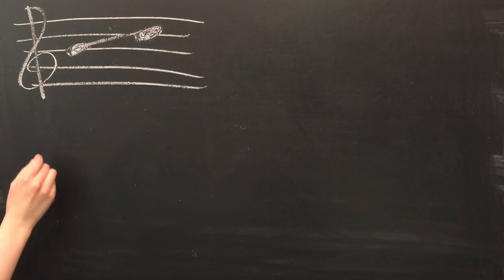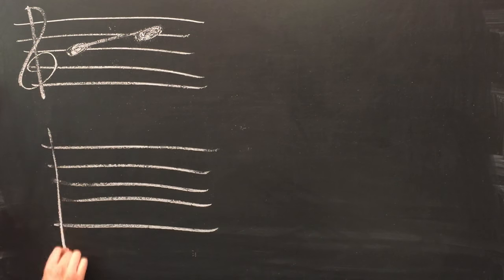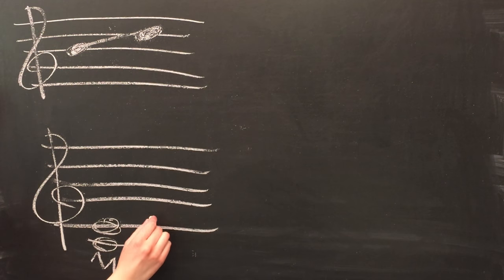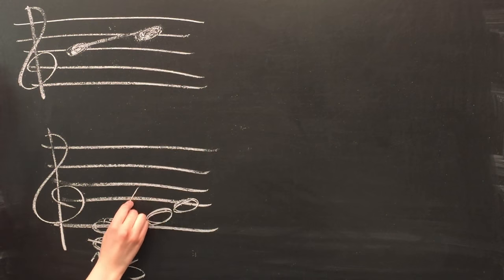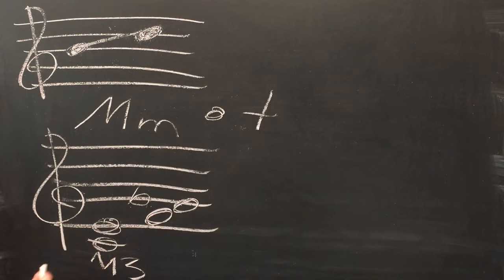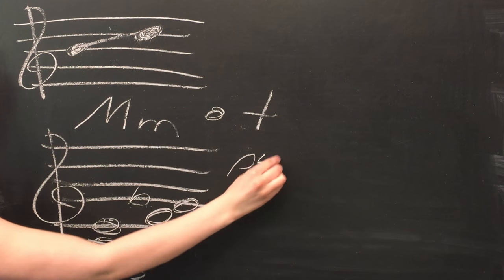For example, we might say we have a major third or a minor second. It's not important that you remember the number of half-steps that make up each interval. Rather, just remember that when you say these words, they refer to the distance between notes. Also, just as a side note, we say perfect fourth and perfect fifth instead of major fourth or major fifth, but they mean the same thing.